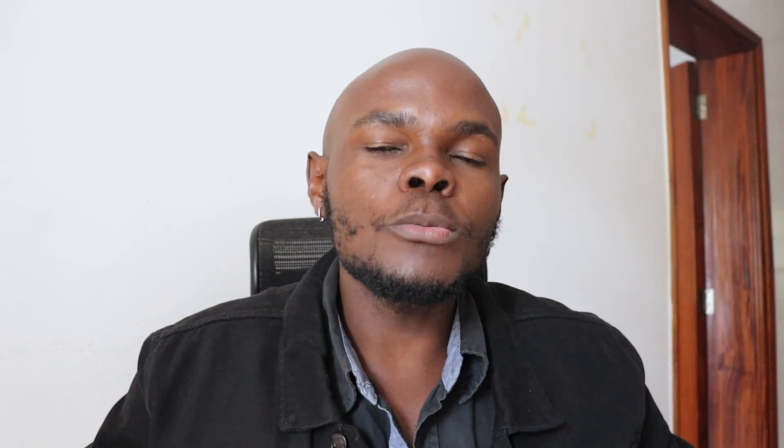With stop limit orders, a stop trigger is combined with a limit order where a trader is able to set a minimum amount of profit they are ready to realize as well as the maximum they are willing to lose on a trade. Once set, a trader just has to wait on the trigger price to be reached, which will automatically set a limit order.